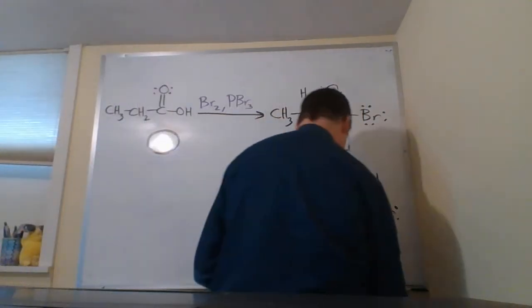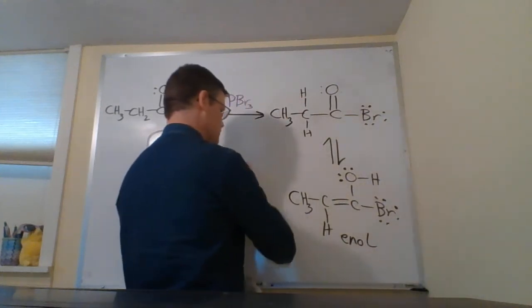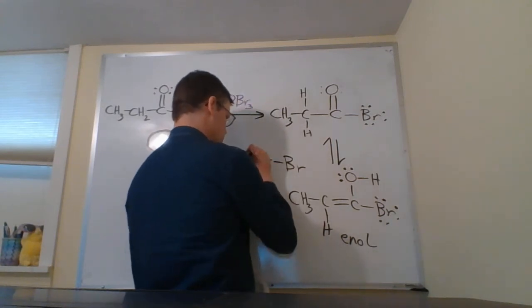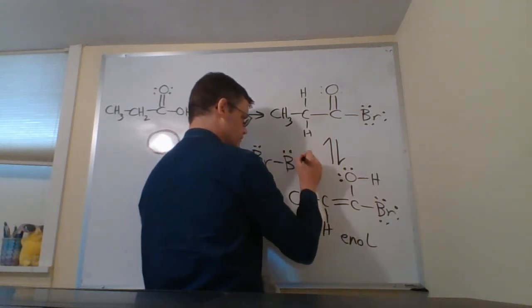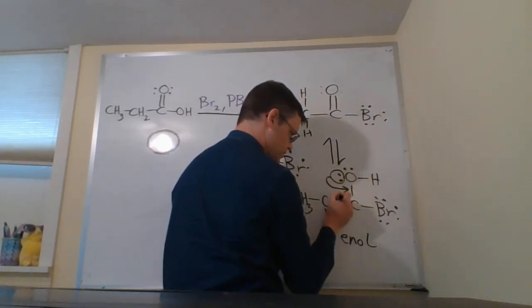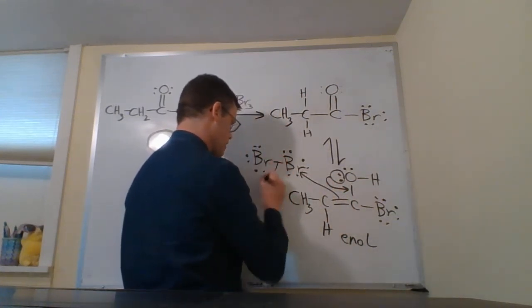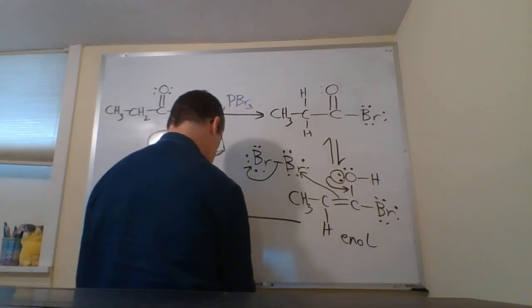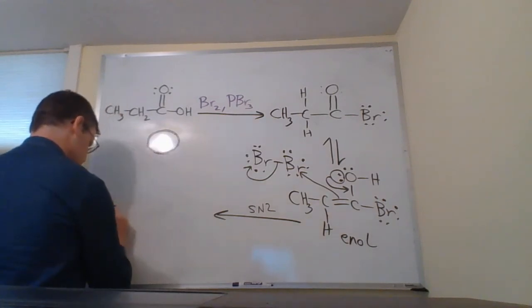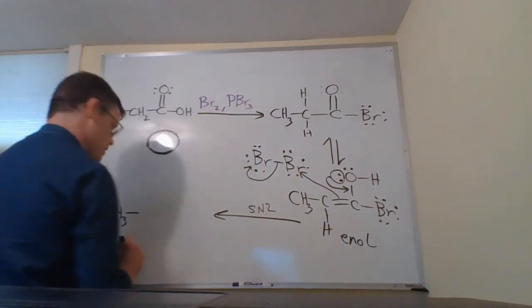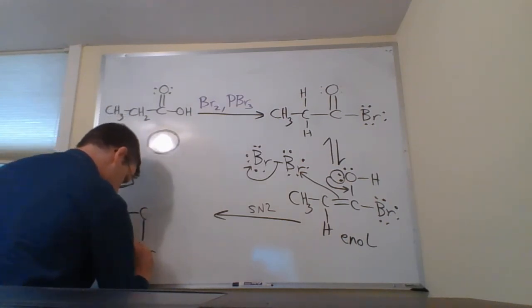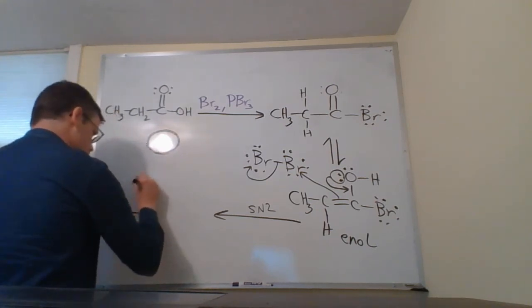So there's our enol form, and then that can react with BR2. The enol can act as a nucleophile and participate in an SN2 type reaction. So that would be our elementary mechanistic step, SN2, and that gets us—let's see, I'm going to put the bromine down here, put the hydrogen up there.